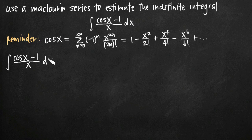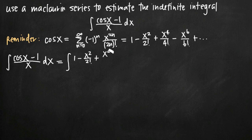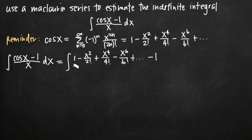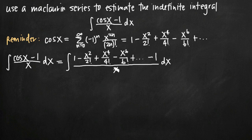So what we're going to say is that the integral of cosine of x minus 1, all divided by x dx — our original integral — is going to be equal to the integral where we replace cosine of x with the first several terms of its series. Remember they're equivalent, so we're not changing anything. We replace cosine of x with 1 minus x squared over 2 factorial plus x to the 4th over 4 factorial minus x to the 6th over 6 factorial, etc. We only need the first few terms. We subtract 1 in our numerator and divide by x in the denominator.